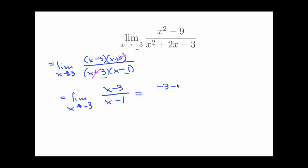I would get negative 3 minus 3 over negative 3 minus 1. Now that's actually a number. This is not going to give me something undefined. So here comes my answer. I have negative 6 on the top and negative 4 on the bottom. And that simplifies to 3 halves. Okay. So that's my limit.